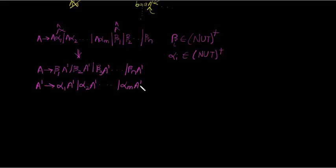We must not forget that this alpha A prime must be terminated somewhere, so we introduce epsilon. This is a standard procedure to eliminate left recursion from a given grammar.